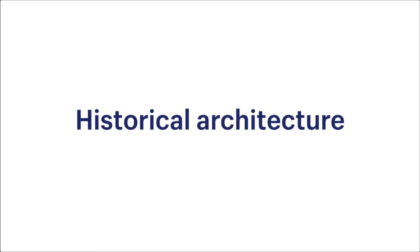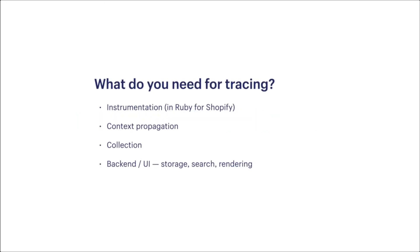Let's start by taking a look at what we built back in the Dark Ages before OpenTelemetry. I'm going to assume familiarity with basic concepts of distributed tracing like traces, spans, and tags. There are four major things we need to implement distributed tracing. Firstly, we need to instrument our own services. At Shopify, most of our services are Rails applications, so we needed instrumentation in Ruby.